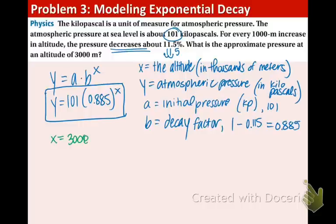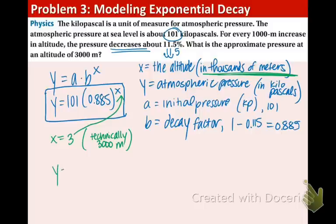To make it easier for ourselves, x is thousands of meters, so we actually don't have to plug in 3,000. We just have to plug in 3 because the unit is in thousands. So now that 3 is going in for the x, and we're going to have y equals 101 times 0.885 to the third power. And that is approximately 70. So that means the pressure at an altitude of 3,000 meters is about 70 kilopascals. Obviously that is smaller than the original 101.